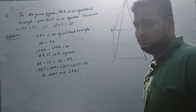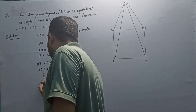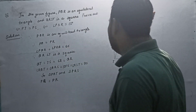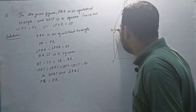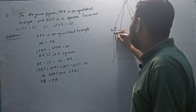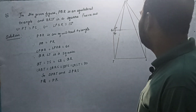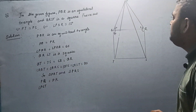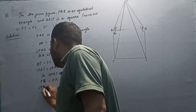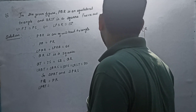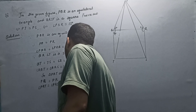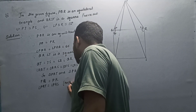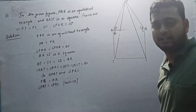Now we find three proofs. Firstly, PQ equal PR — because PQR is an equilateral triangle. Secondly, angle PQT equal angle PRS — each is 150 degrees. Why? Because this angle is 60 degrees and this angle is 90 degrees, so 90 plus 60 equals 150 degrees. So angle PQT equal angle PRS equal 150 degrees.